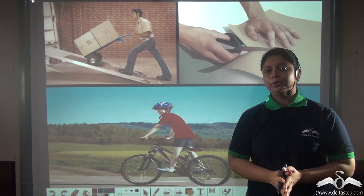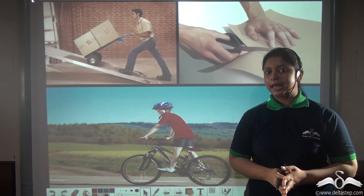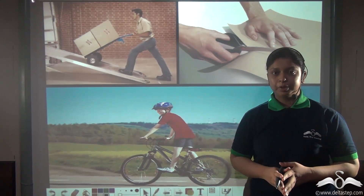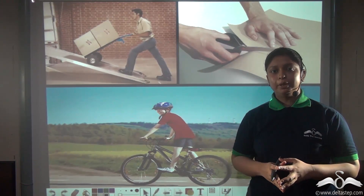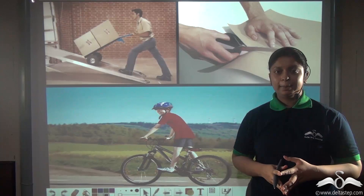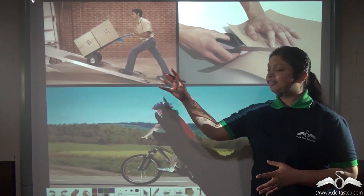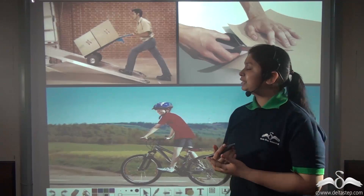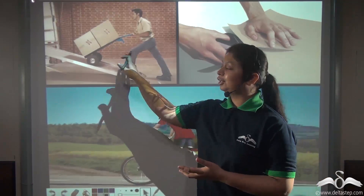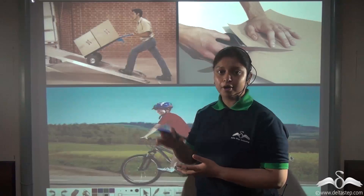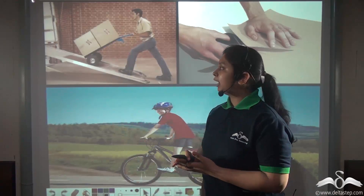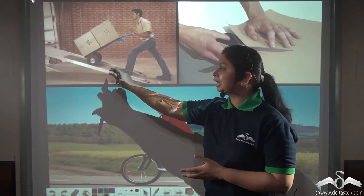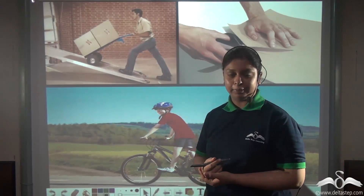We know that machines help us in doing a lot of work. For example, machines help us in lifting heavier objects. Here the man is lifting heavy boxes by using a simple machine like an inclined plane.